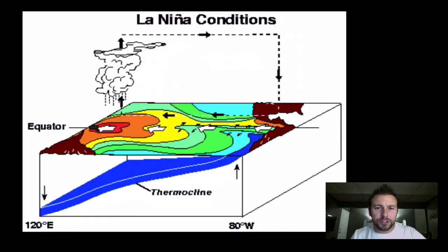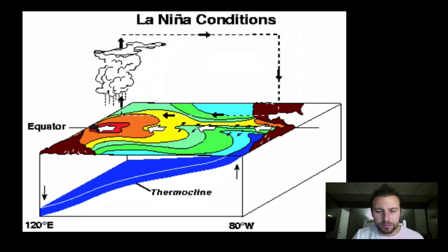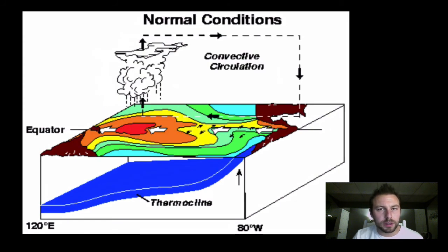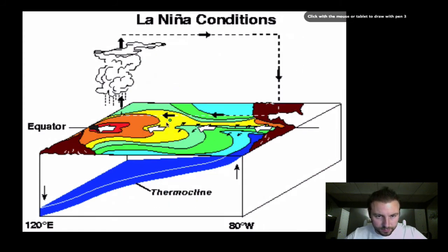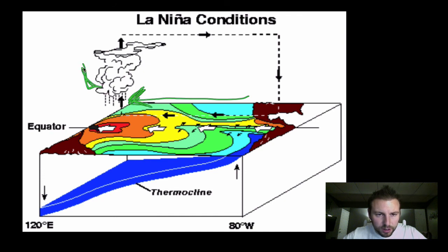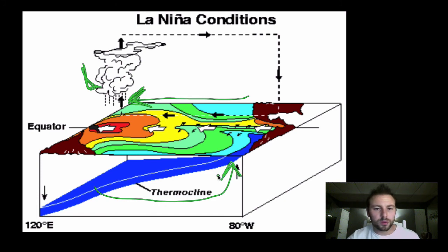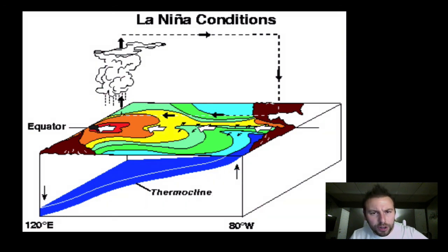Now we can have the exact opposite of El Niño, which is La Niña conditions. La Niña conditions are like a heightened or more extreme version of normal conditions. If you look at this diagram and the one before it, our low pressure system is still near or over Australia, but during La Niña notice how it shifts a little bit more. The walker circulation is even stronger, pushing that low pressure even further towards the west. Notice the thermocline is a lot more sharp, so upwelling will also be more pronounced, meaning more nutrients can make it towards the surface. La Niña is not such a bad thing for the Pacific Ocean.